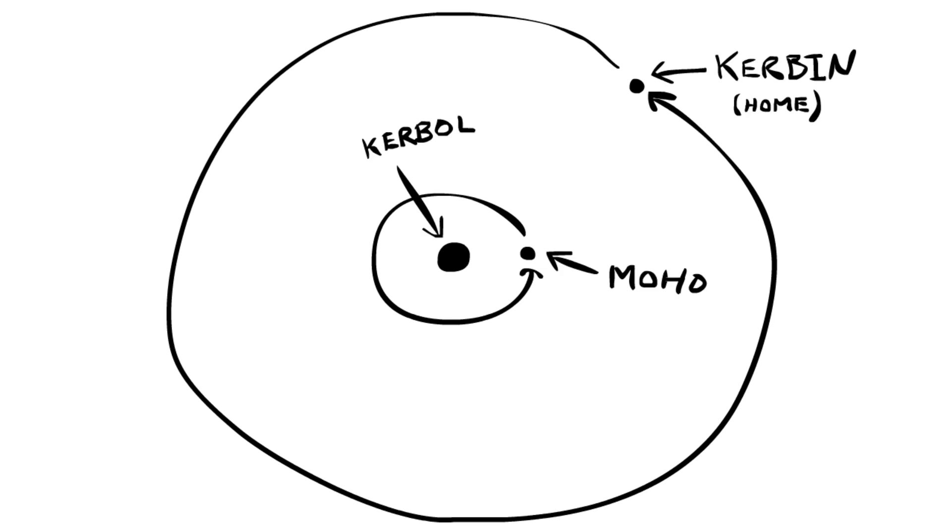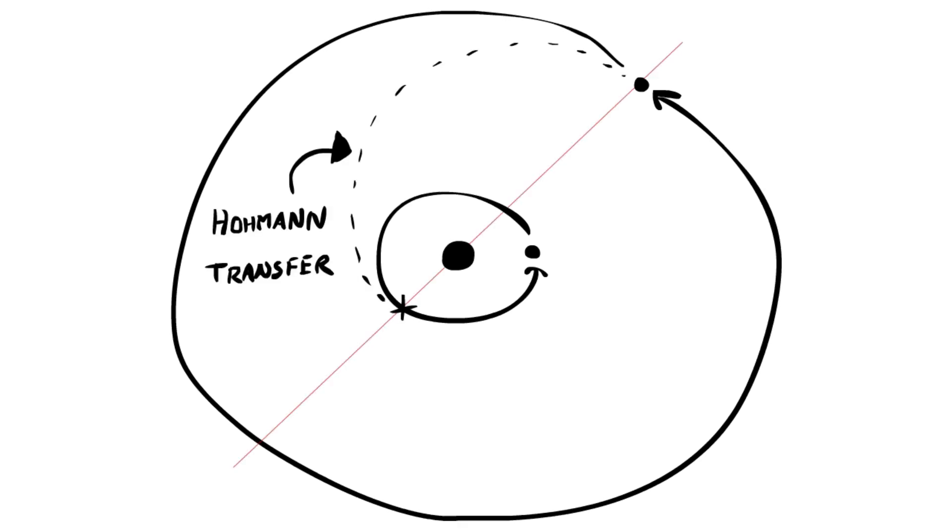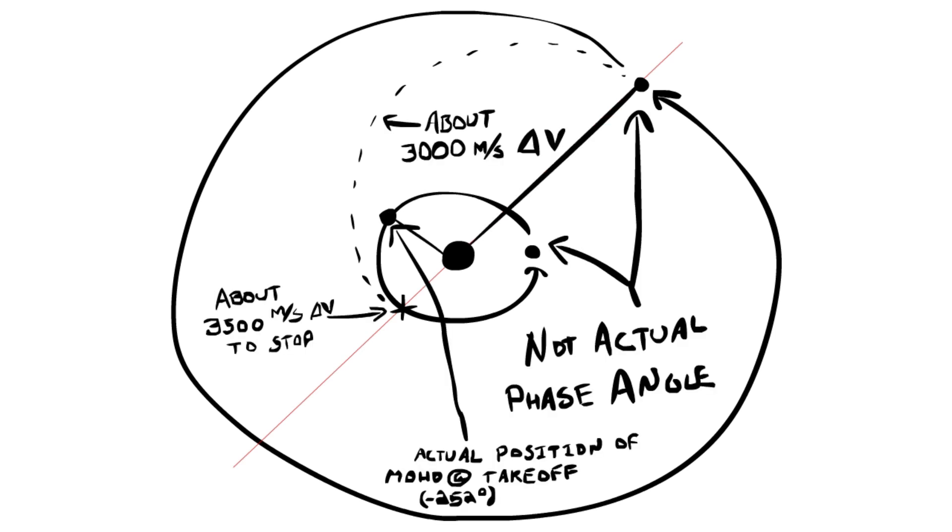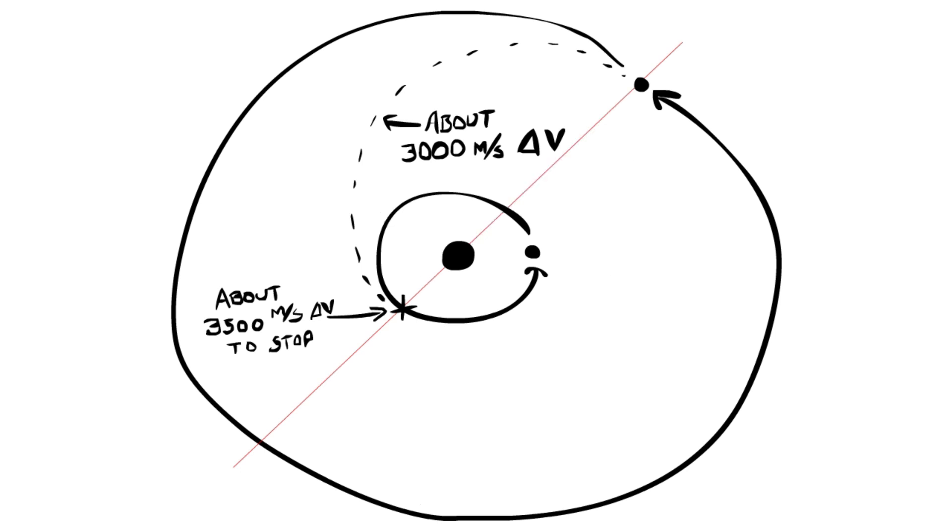Now basically, we're going to leave Kerbin at such a speed that we will reach Moho at the opposite side of where we left Kerbol from. That's called the Hohmann transfer. It takes about 3,000 meters per second delta-v to get from Kerbin to Moho.